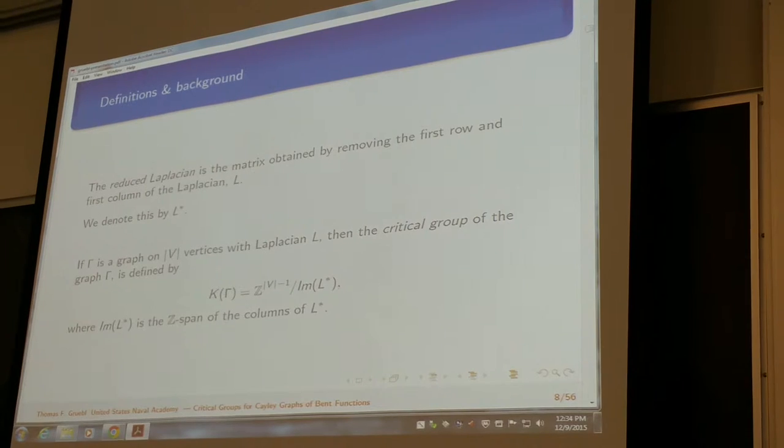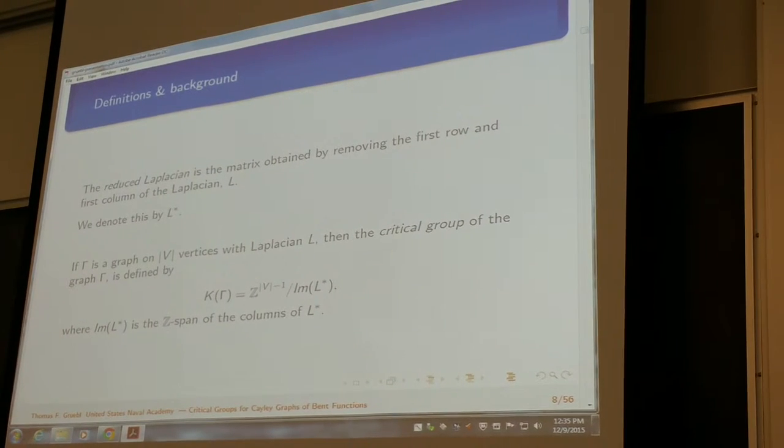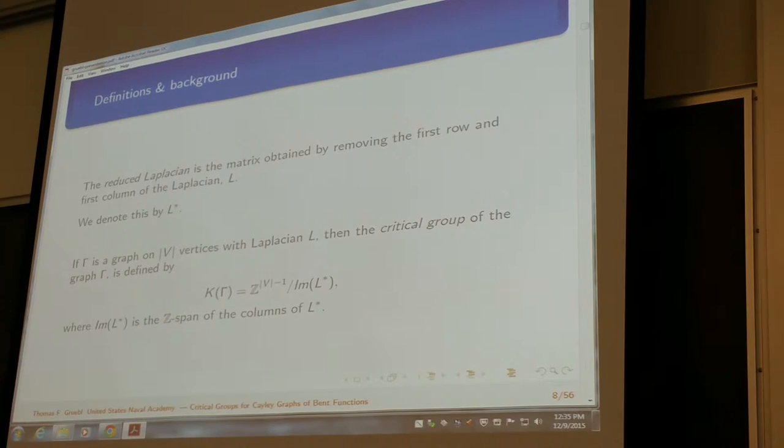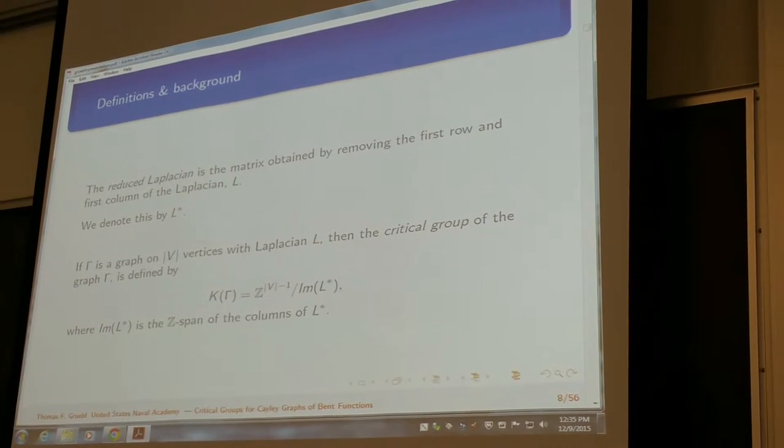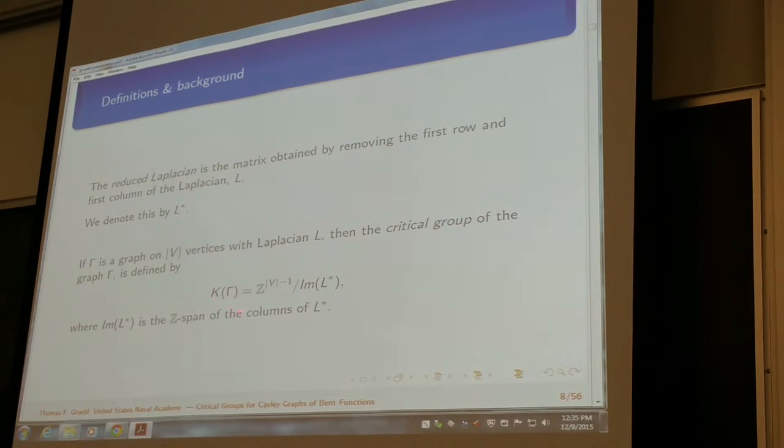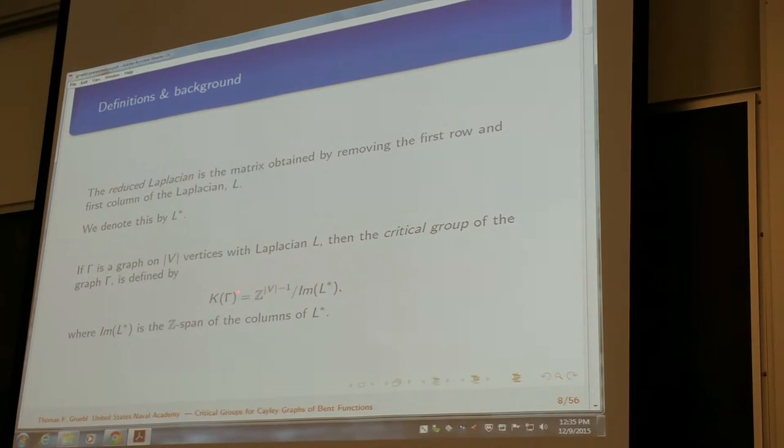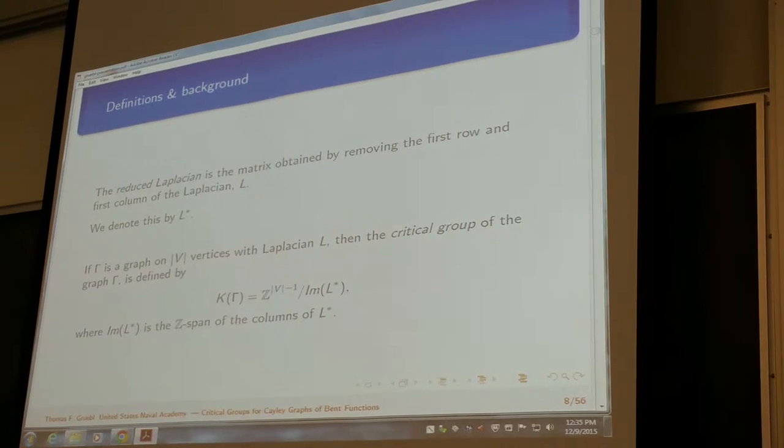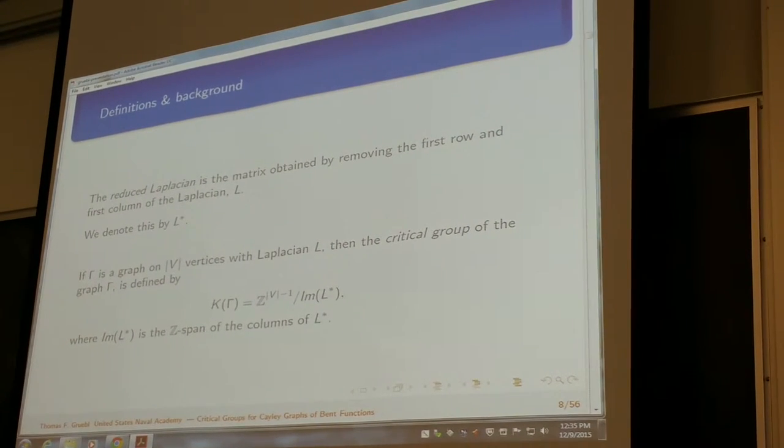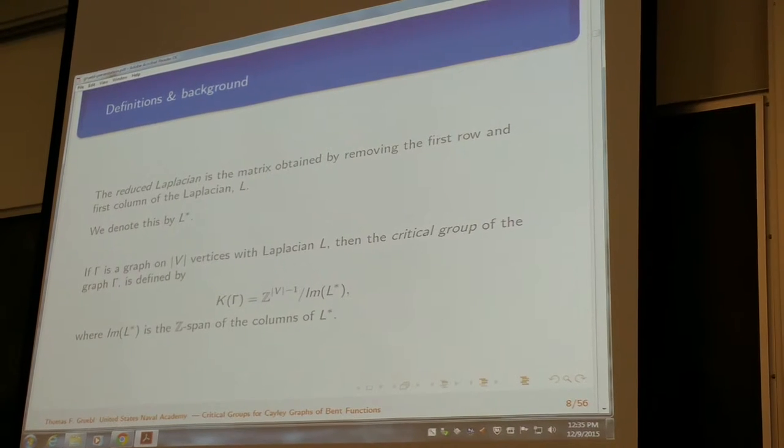It's important to use this one instead of the Laplacian because it's invertible. So we can use it to get the critical group of the graph, which is given by k of gamma. We denote the critical group k of gamma equals Z to the size of the vertex set minus 1 modulo the image of the reduced Laplacian.